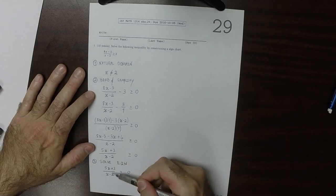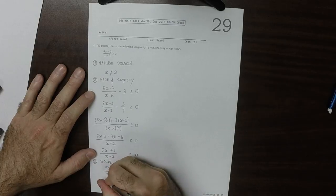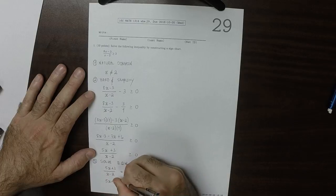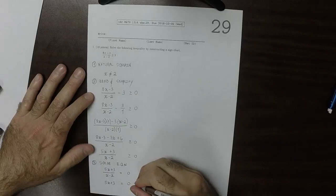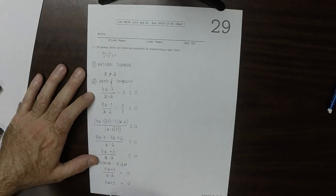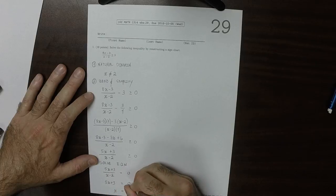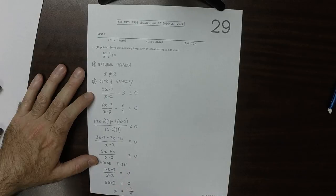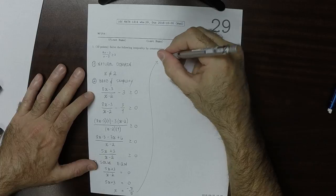So 5x plus 3 divided by x minus 2 equal 0. So since this fraction is equal to 0, it must be the case that the numerator is 0. So if we move the 3 over and divide by 5, that's saying that x is negative 3 over 5.